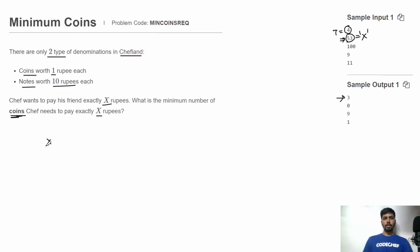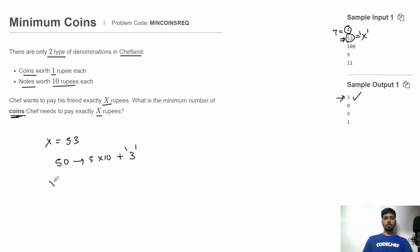In the first test case, X is 53. Chef can pay 50 rupees using 5 notes of 10 rupees each, and the remaining 3 rupees using 3 coins of 1 rupee each, so the total number of coins is 3 and the output is 3. In the second test case, X is 100, so chef can pay using 10 notes of 10 rupees and 0 coins, so the output is 0.